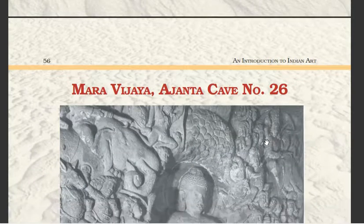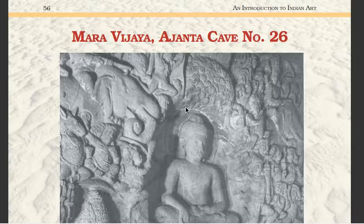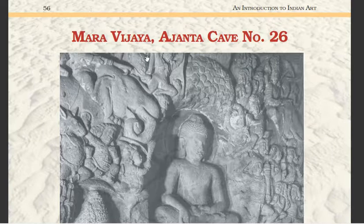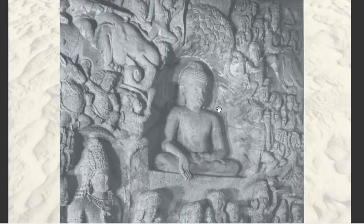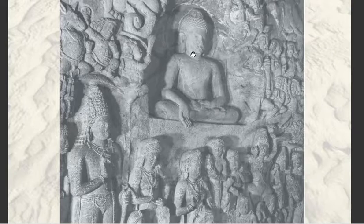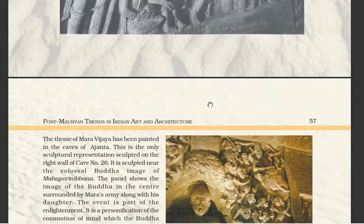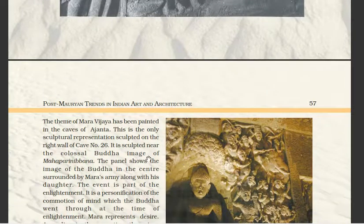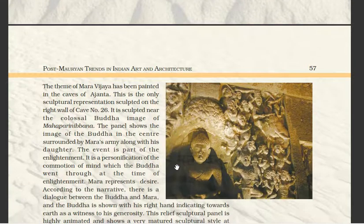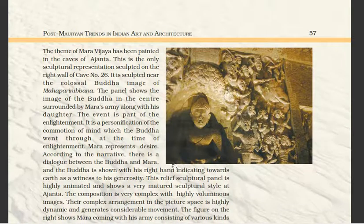Next we have the Mahajanaka Jataka from Ajanta cave number 26 — remember, Mahajanaka Jataka is in cave number 26 at Ajanta, as they may ask you to match this in an exam. The theme of the Mahajanaka Jataka has been painted in the caves of Ajanta, but this is the only sculptural representation, sculpted on the right wall of cave number 26. It is sculpted near the colossal Buddha image of the Mahaparinibbana. The panel shows the image of the Buddha in the center surrounded by the Mara army along with his daughters. This event is part of the enlightenment and is a personification of the commotion of the mind which the Buddha went through at the time of enlightenment.